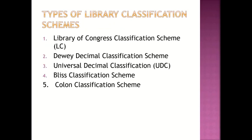Let's now look at the different types of classification schemes. There are about six types of classification schemes, but five are popularly used. The first is the Library of Congress Classification Scheme. The second, Dewey Classification Scheme. The third, Universal Decimal Classification Scheme. Then Bliss Classification Scheme, and Cologne Classification Scheme.